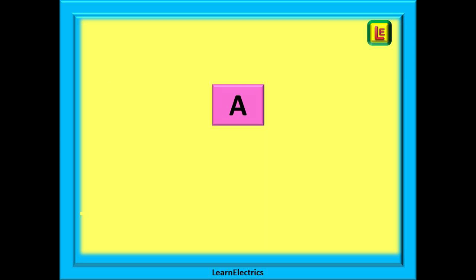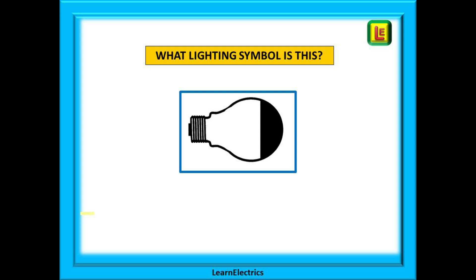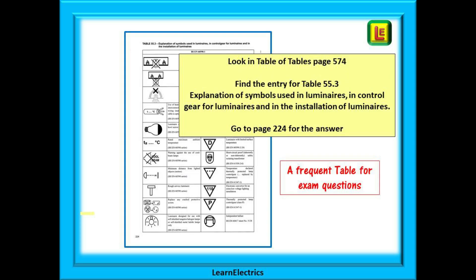Here's the first one. In this example, what lighting symbol is this? This symbol or one of its neighbours often appears as a question. You should by now know that the answer would be in a table. Look in table of tables on page 574 then find the entry for table 55.3. This is titled 'Explanation of symbols used in luminaires, in control gear for luminaires and in the installation of luminaires,' and it tells us to go to page 224 for the answer.